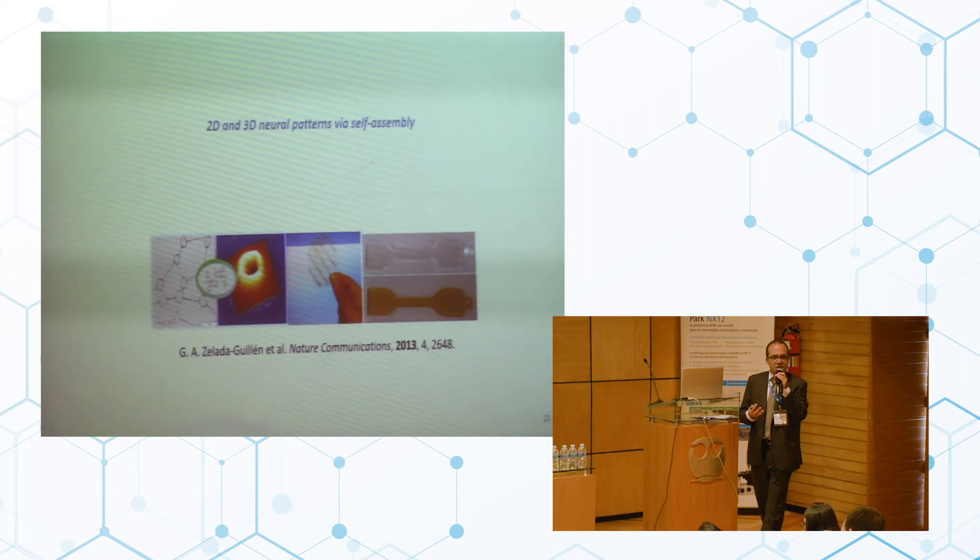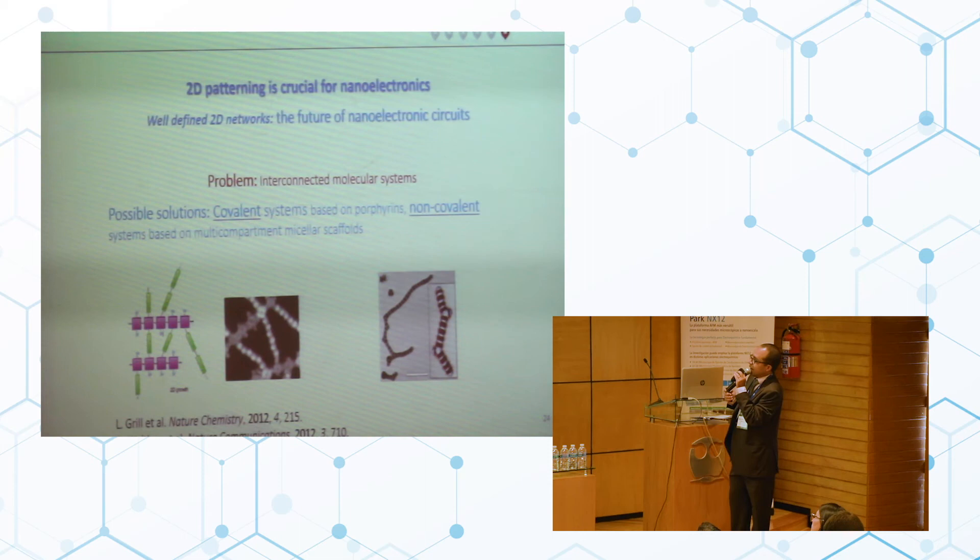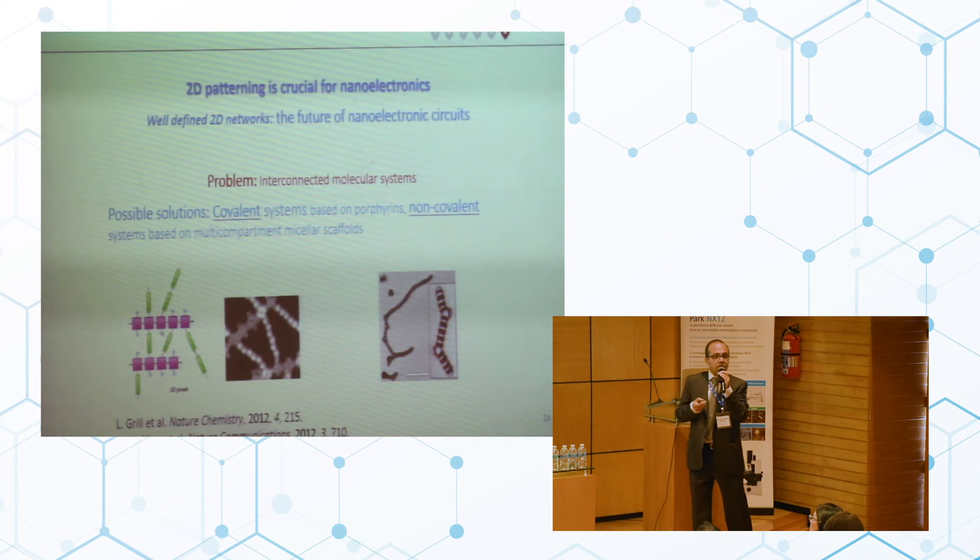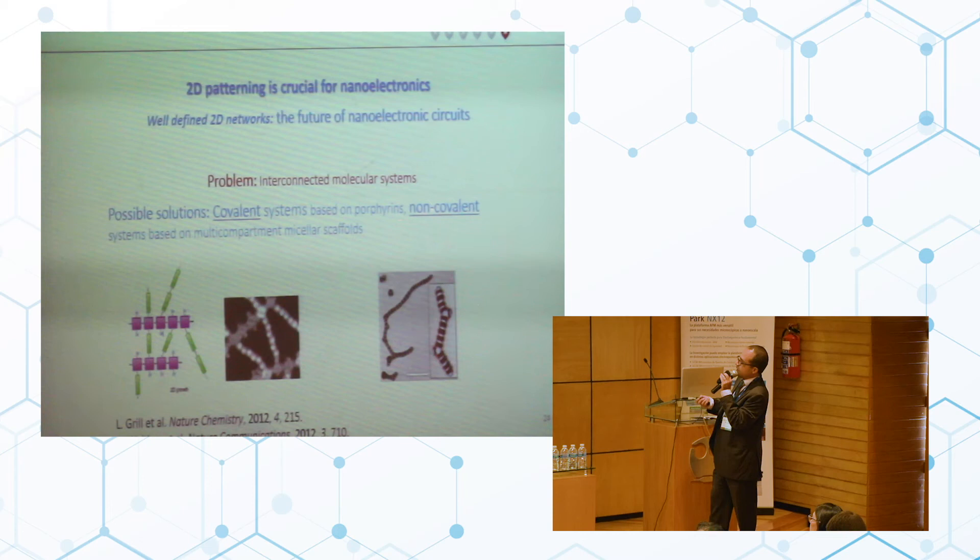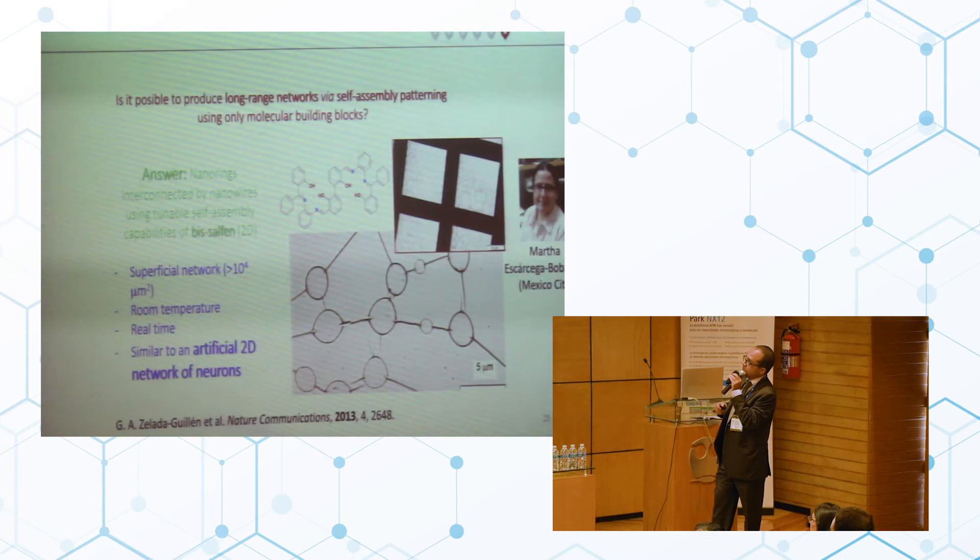And an example of this approach of designing building blocks, studying what they could do depending on the information that is included in a particular molecule, is this: 2D and 3D neural patterns via self-assembly. Everything started with a problem. Can we have interconnected molecular systems which could be potentially used in a future in nanoscale circuitry? Possible solutions at that time were you can connect covalently different molecules, or either connect multicompartment micellar scaffolds using non-covalent interactions. But is it possible to produce long-range networks using only self-assembly patterning but only using one single building block?